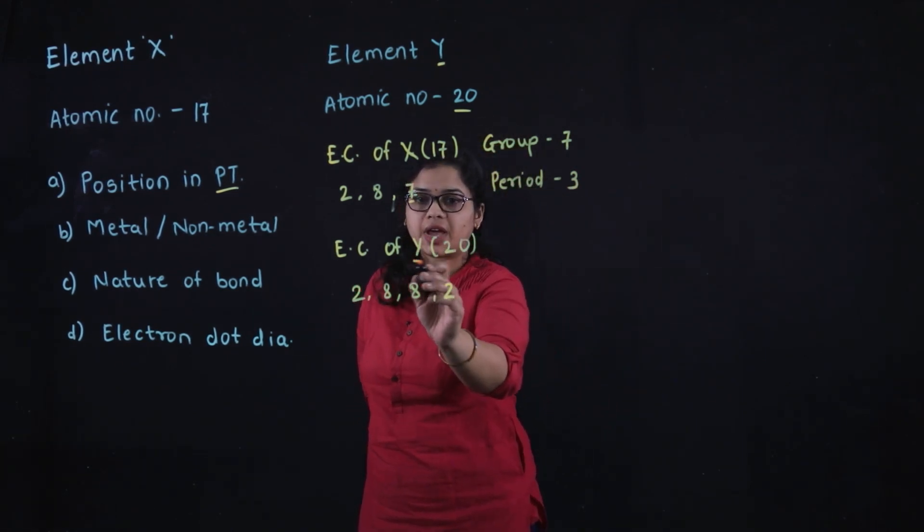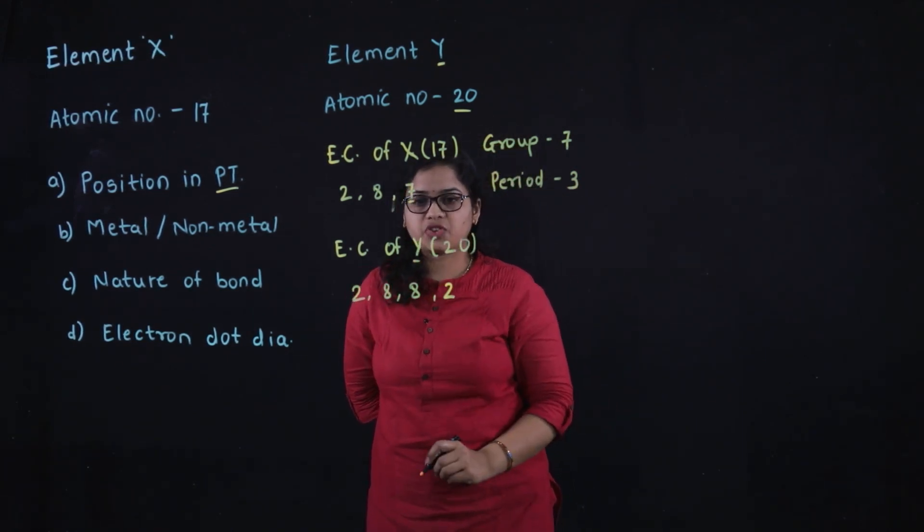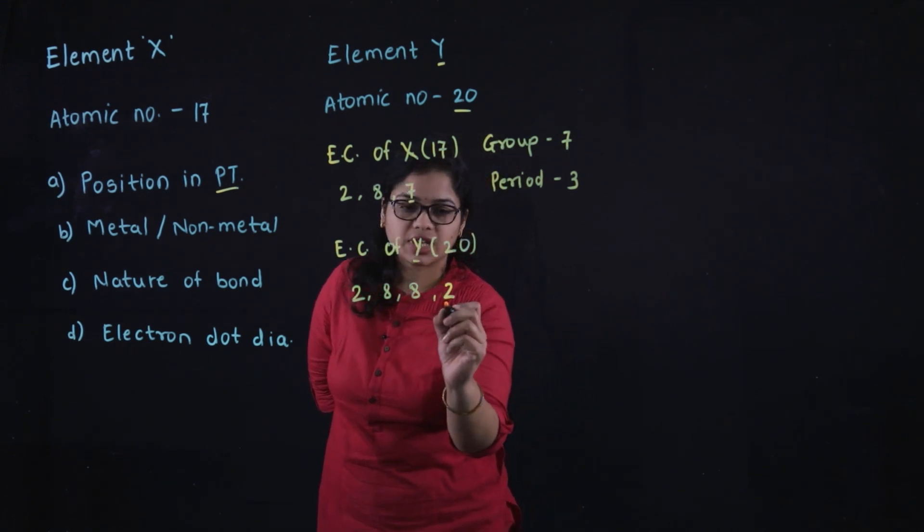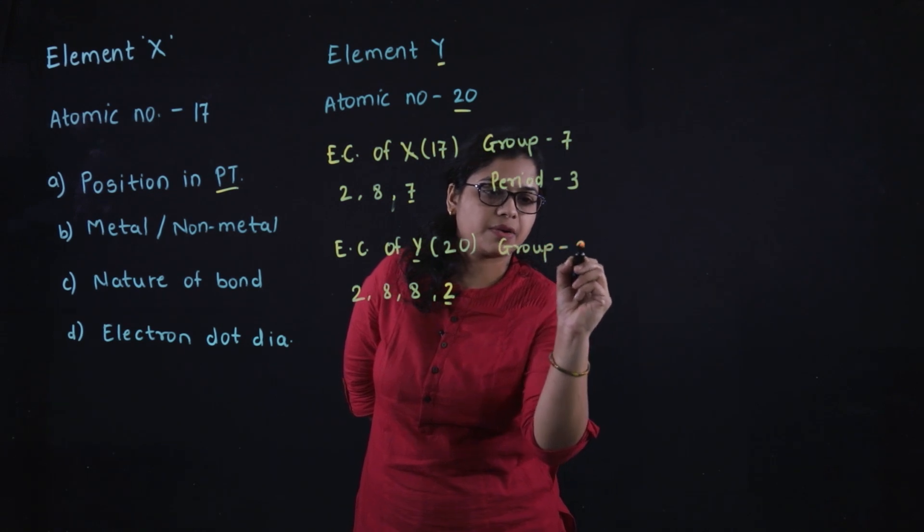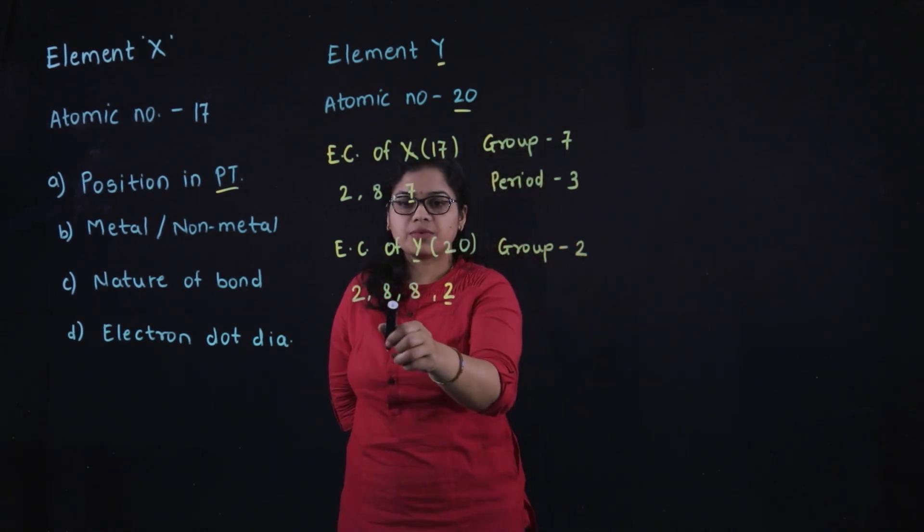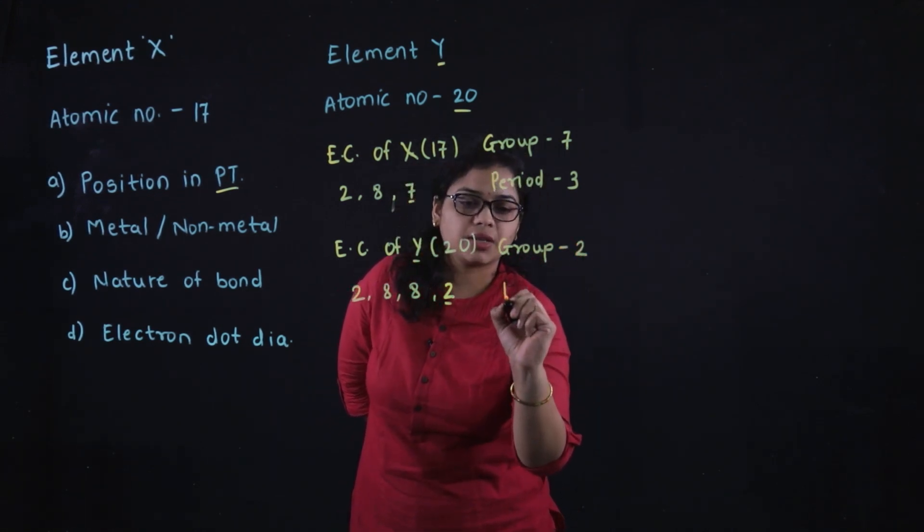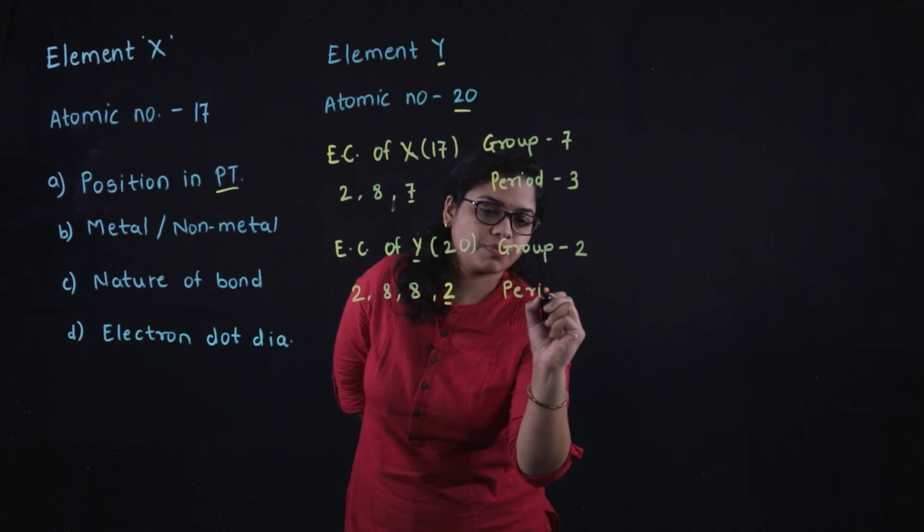For element Y, the electronic configuration shows the valence electrons are 2, so it belongs to group 2. There are 4 shells, therefore it belongs to period 4.